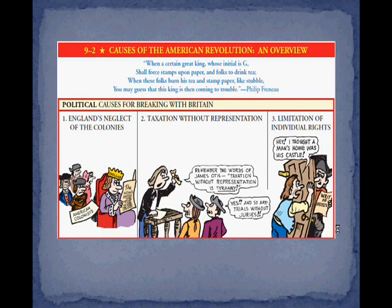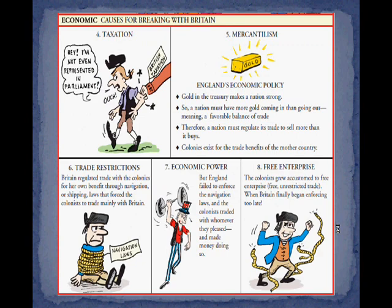Next we're looking at economic causes — anything to do with money. Number four is actually the whole taxation process, the giving of money to the government. Mercantilism is an idea we covered in the last set of notes, but some of you really seem to struggle with it, so I'm going to try to go into more detail here so that hopefully you can understand it.